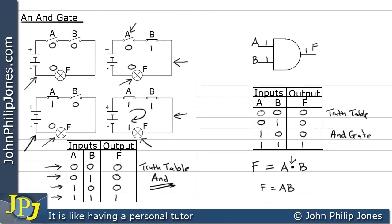The key to memorizing the functionality of an AND gate is as follows: we get a one at the output when both the inputs are a one. Every other condition gives us a zero at the output. We can also think of it as: we get a zero at the output when any of the inputs are a zero, or both the inputs are a zero.